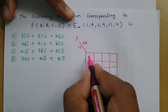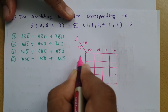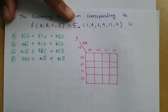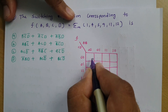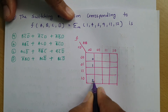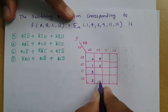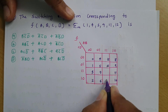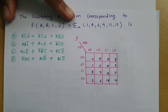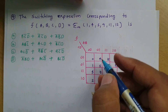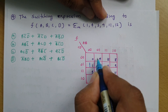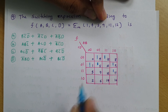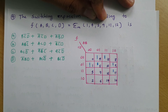Function f(ABCD) is expressed as a summation of minterms 1, 4, 5, 9, 11, and 12. We need to represent it as a Boolean expression. Let me make the KMAP where AB is on one axis: 00, 01, 11, 10, and CD is: 00, 01, 11, 10. Location positions go from 0 to 15. We place 1s at positions 1, 4, 5, 9, 11, and 12.